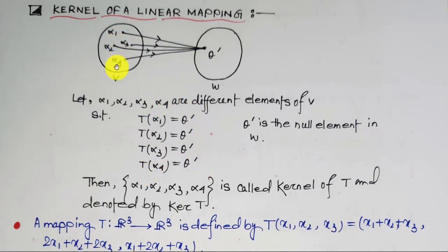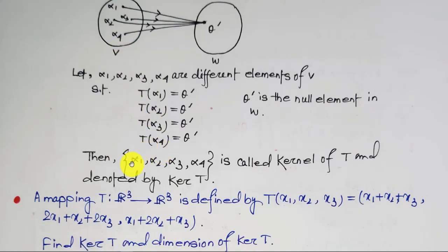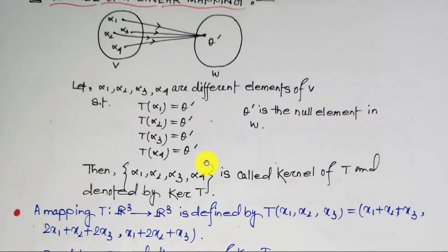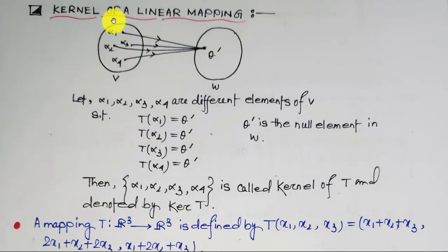I have considered only four elements here; it may be more or less. Now alpha 1, alpha 2, alpha 3, alpha 4 form a subset of set V. This subset is known as the kernel of the mapping T and is denoted by ker T. Ker T is a subset of the domain set V of which the image of each and every element is theta dash, the null element.